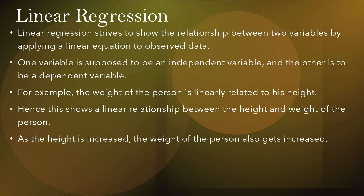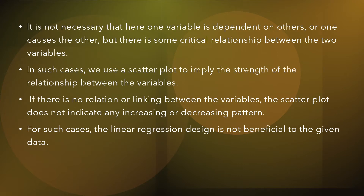For example, the weight of a person is related to that person's height. This shows a linear relationship between height and weight. As height increases, weight is also supposed to increase. It is not necessary that one variable causes the other, but there is some kind of relationship that exists between the two variables.